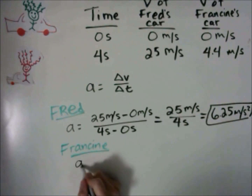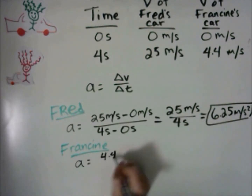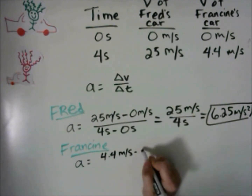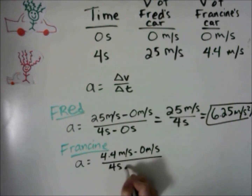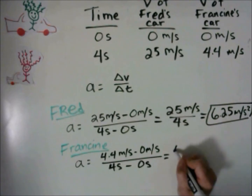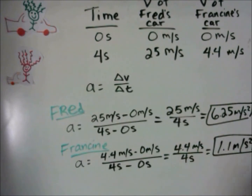Francine's acceleration we can calculate using her final velocity of 4.4 meters per second, minus her initial velocity, over her final time minus her initial time. We get 4.4 meters per second divided by 4 seconds, or 1.1 meters per second squared. So Fred had a greater acceleration than Francine — his was 6.25 meters per second squared and hers was 1.1 meters per second squared.